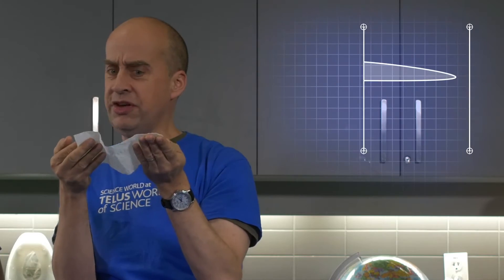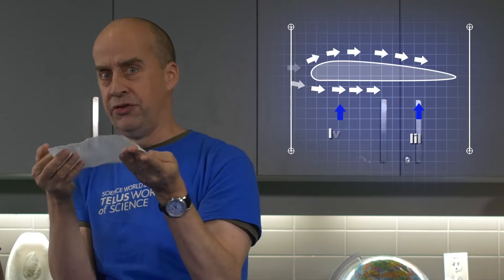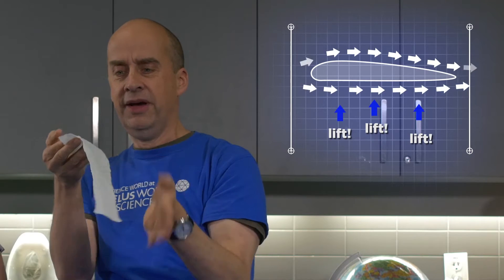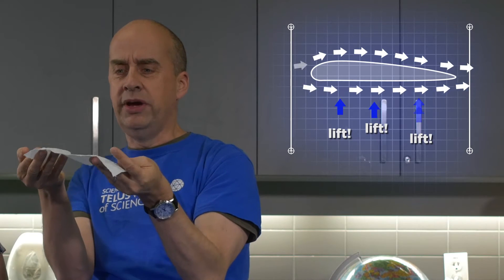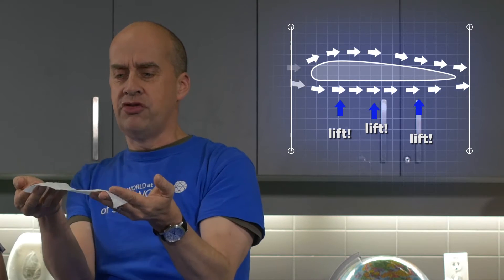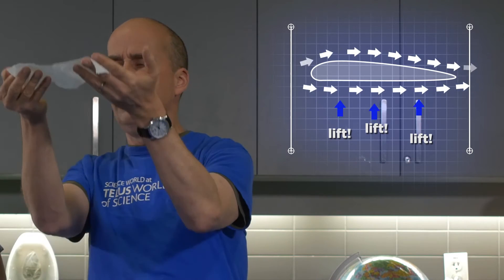This is one of the things that helps an airplane stay in the air. The fast-moving air over the top of the wing creates lower pressure, and other air pushes on the bottom and lifts it up.